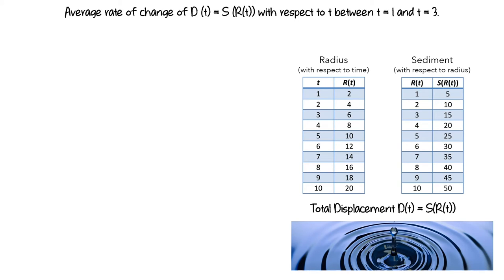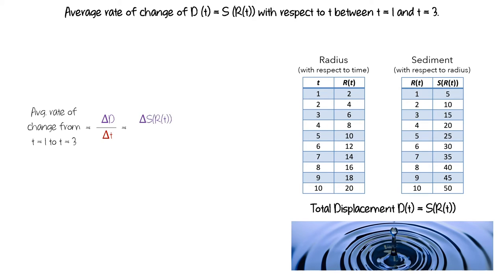I'll show you two different ways to think about this scenario. First, let's think about the average rate of change of sediment with respect to time from time one second to three seconds. It is a ratio of the corresponding change in d and the change in t. We can rewrite this ratio as delta s of r of t per an amount of change in time.